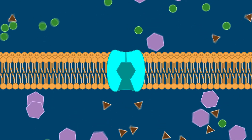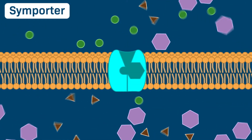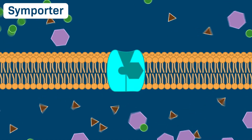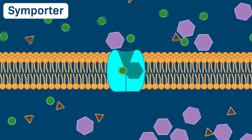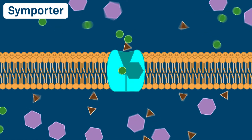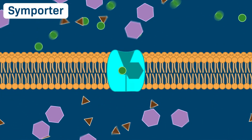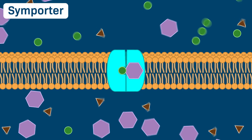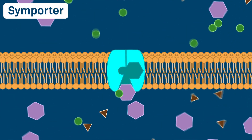Let's consider another kind of carrier protein, called a symporter. A symporter carries two types of solutes in the same direction across the membrane. In this example, the symporter ferries both the solutes represented by the green circles and the solutes represented by the purple hexagons into the cell.